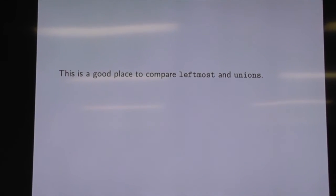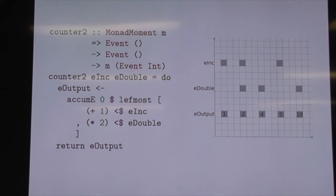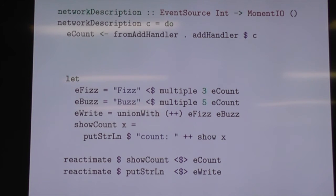This is as good a place as any to talk about the difference between leftmost and unions, which are dealt with as lists of events. With leftmost, when two events fire simultaneously, it picks the first thing in the list — that's why we go from one to two by adding one, not doubling it. With unions, it actually composes them when simultaneous, from the bottom to the top. So if increment and double fire at the same time, it doubles the one and then adds one to get three. But anyway, we can count now by accumulating events.